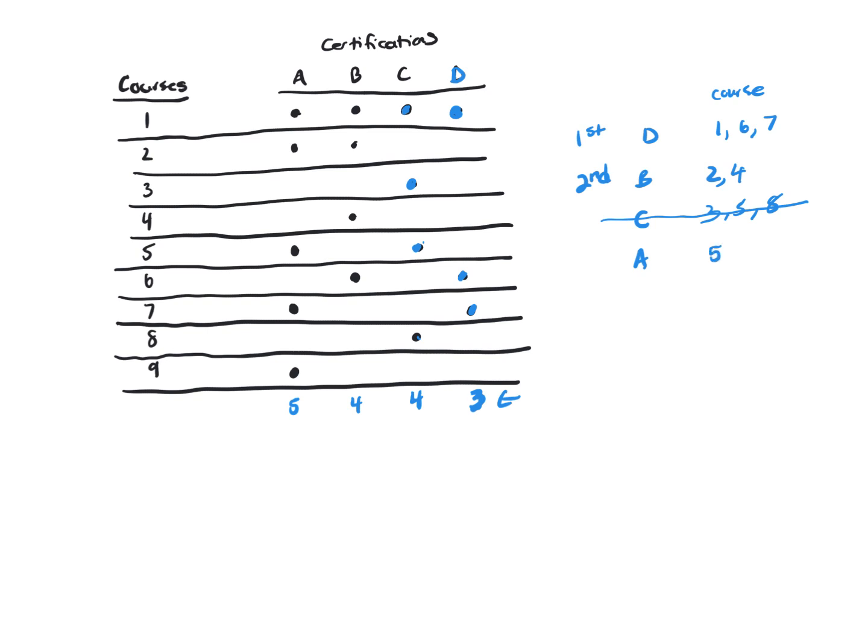And she also needs, she's done seven, but she needs nine. So, two more. So, this is what she's going to do third because it takes less certifications, less courses than what C did.